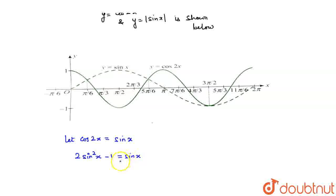If I transpose and take the minus sign common, it becomes 2 sin squared x plus sin x minus 1 equals 0.